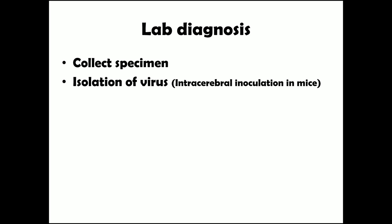One isolation method is intracerebral inoculation in mice. The virus is injected intracerebrally into mice — if flaccid paralysis results, it is a Group A Coxsackievirus; if spastic paralysis results, it is a Group B Coxsackievirus. Another test that is highly sensitive and highly specific is the polymerase chain reaction, abbreviated as PCR, which is one of the most commonly trusted diagnostic tests.